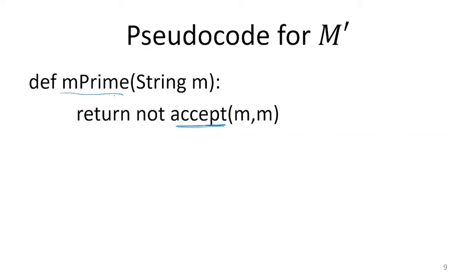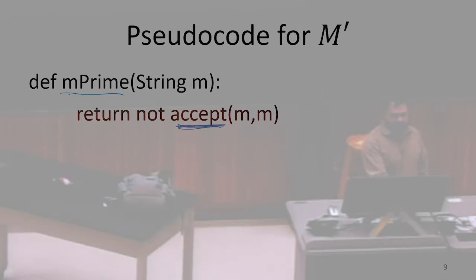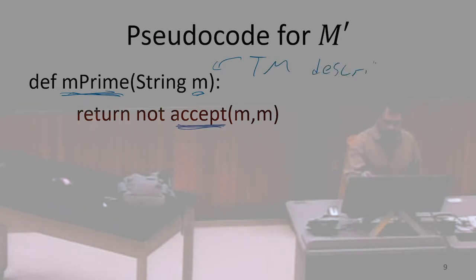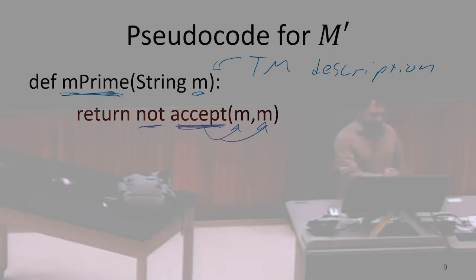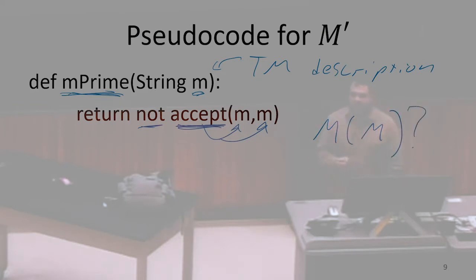...we could define this new function m′. So if I had this function for accept, I could define some new function m′, where what m′ did is it took as input some string — which we're going to say is maybe the description of a Turing machine. All that this function did was it invoked accept on that string with itself, so where both the Turing machine description and the input to that Turing machine are the same string, and returned the opposite of that. So whatever accept says, we return the opposite.